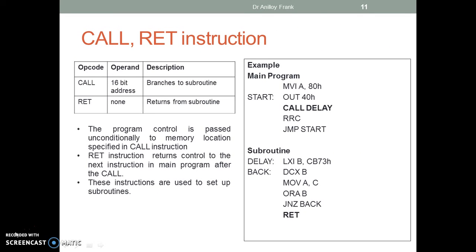The call and return instructions: the call instruction branches to a subroutine; the return instruction returns from the subroutine. The program control is passed unconditionally to the memory location specified in the call instruction. The return instruction returns control to the next instruction in the main program after the call. These instructions are used to set up subroutines. Example: in the main program, the call instruction passes control to the label 'delay' in the subroutine. When the subroutine is complete, the return instruction returns control to the next instruction after the call in the main program.